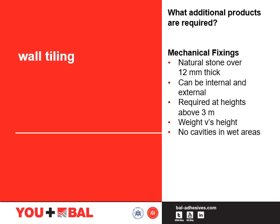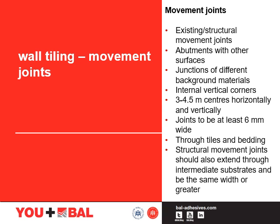When wall tiling with natural stone over 12mm thick, mechanical fixings must be used, either internally or externally. For all tiling, mechanical fixings are required at heights above 3 metres. But when considering weight versus height, if we have a particularly heavy product we might also need to mechanically fix it. There must be no cavities in wet areas, so when using mechanical fixings in a wet area we also need to use a solidly bedded method. As with the floor, we must include movement joints in wall tiling — over existing or structural movement joints, abutments with other surfaces such as where two walls meet at a right angle, 3 to 4.5 metres horizontally and vertically, and those joints should be at least 6mm wide through the tiles and the bedding. Structural movement joints should be extended through the intermediate substrates and be the same width or greater than those joints.